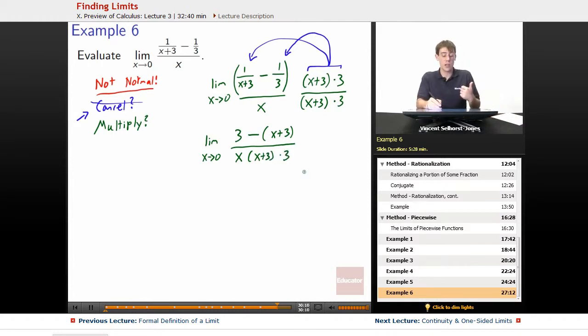So at this point, we see x plus 3 on top and x plus 3 on the bottom, but we have to be careful. Don't cancel stuff, right? We can't cancel because there's still a subtraction sign on the top. We have to have the whole factor. So we keep working to simplify. Limit as x goes to 0, 3 minus quantity x plus 3. Well, the 3's will cancel out and we'll be left with just negative x on the top. Negative x on the top divided by x times x plus 3 times 3.